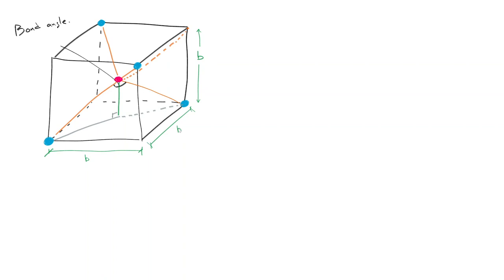What can we do? In that case, this line traversing the bottom face - if the edges are b, this would be root 2b, because you've got b squared plus b squared equals that line squared. Take the square root, you get root 2b. That's really nice because now we can work out an angle.